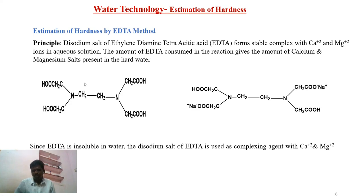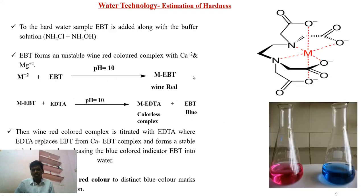From that titration, we calculate the calcium and magnesium salts present in the hard water. Since EDTA is insoluble in water, we use the disodium salt of EDTA as a complexing agent. We are taking ammonium chloride and ammonium hydroxide buffer along with EBT as an indicator. To our water sample, we add EBT as well as ammonium chloride and ammonium hydroxide buffer. This basic buffer is used to maintain the pH at a constant level.